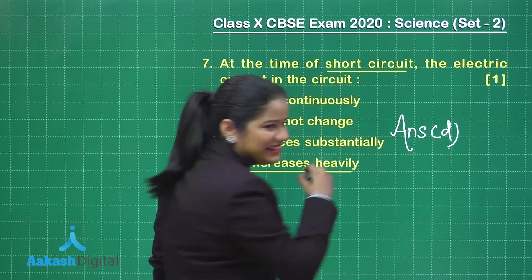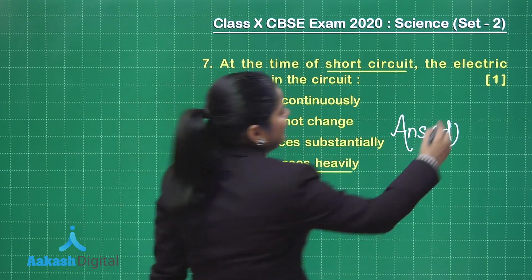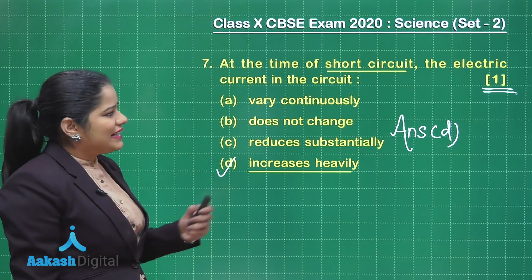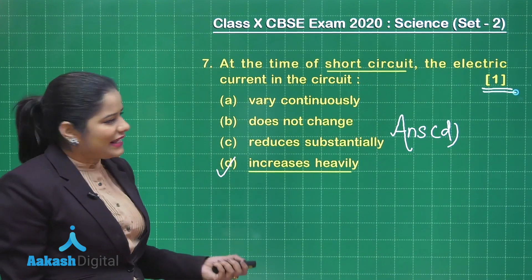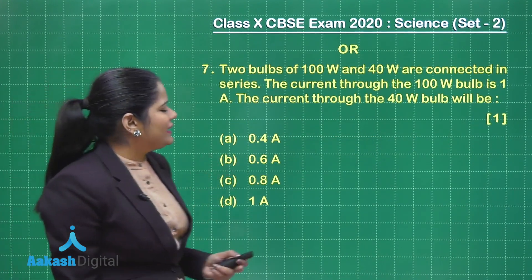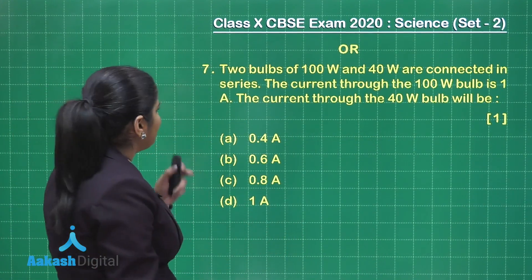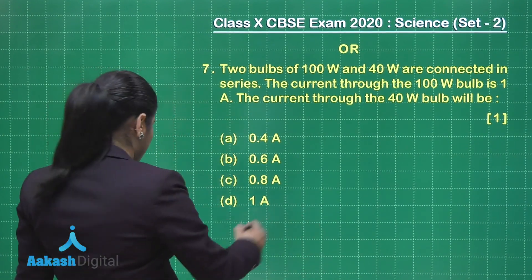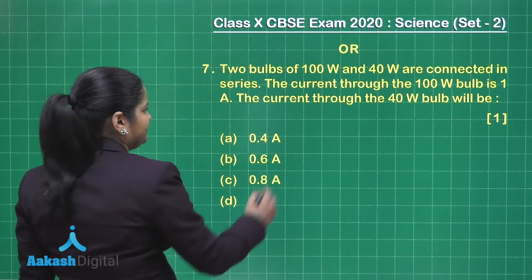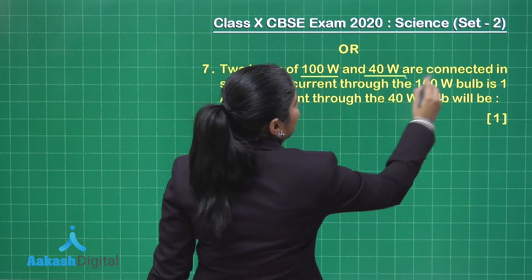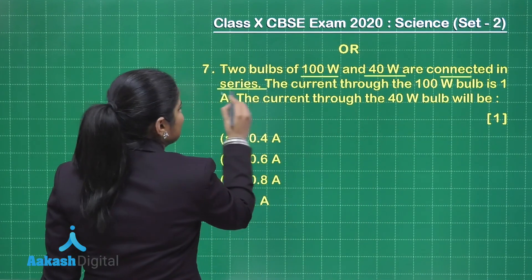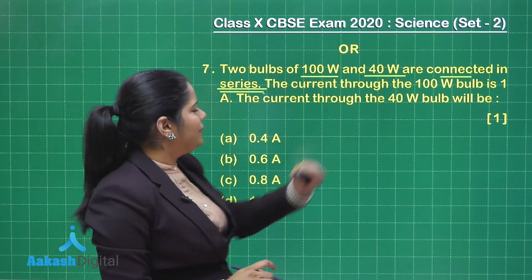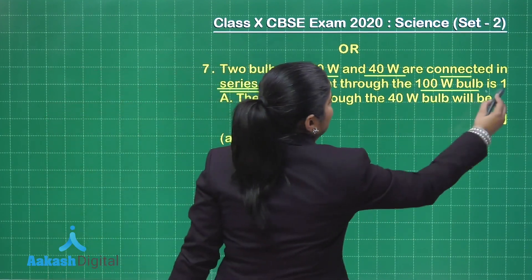If you have marked option D, definitely you will get one mark. Let's have a look at the second choice. In question number 7, second choice, we are given: two bulbs of 100 watt and 40 watt are connected in series. The current through the 100 watt bulb is 1 ampere — see, this is mentioned to us in the question.